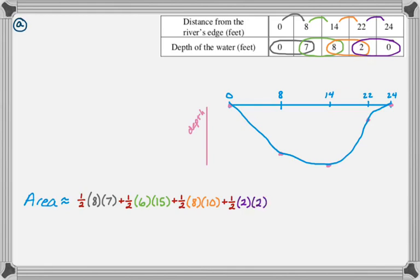Typically you could just leave that, but actually you're going to need it in the next part. So I'm definitely adding those up to get 115 square feet. And that is part A.